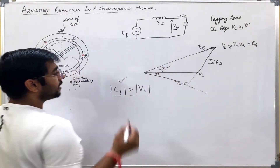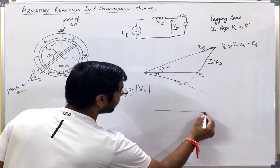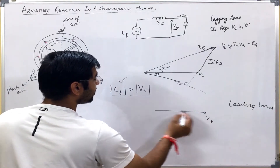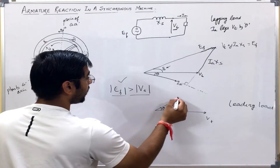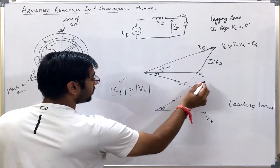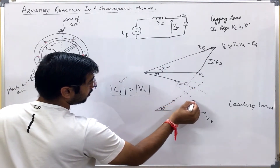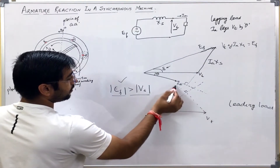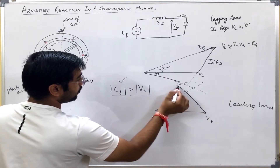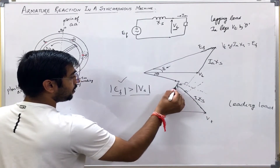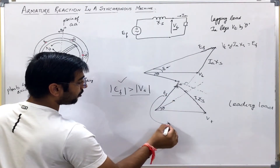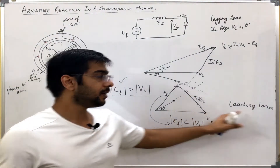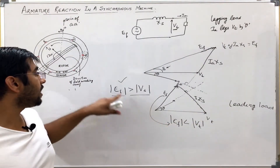Similarly, if the current is leading — let us say if the current is leading, this is for a leading load now — let us say current is leading by the same angle theta. I will take some phasor which is perpendicular to it, 90 degrees. If I take some phasor whose magnitude is equal to Ia·Xs, then this will give me EF. Clearly from here, I can see that EF magnitude is smaller than Vt. So for leading load, excitation is smaller, but for lagging load, excitation is higher.